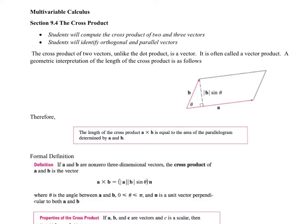With the dot product, if you remember, we utilized the components that were similar in the vectors. For instance, we multiplied the X component of vector A with the X component of vector B, and the Y component of vector A multiplied by the Y component of vector B. With the cross product, we're actually more concerned with the components that don't match. When we look at the cross product, we want to identify essentially a third vector.